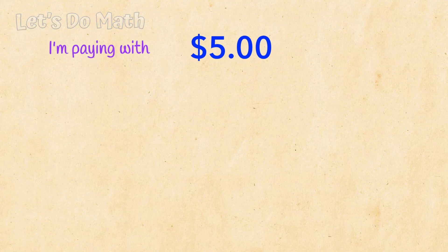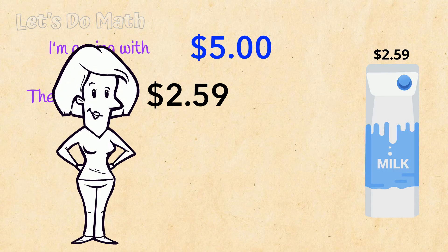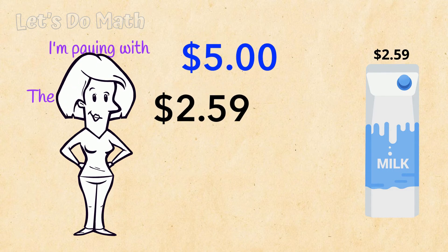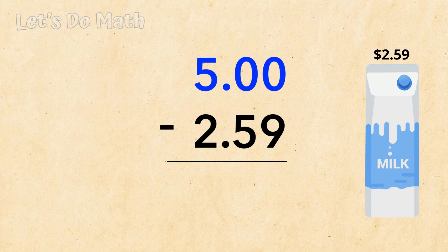I'm paying with $5. The milk is $2.59. Line up the decimal points, of course. $5 minus $2.59.